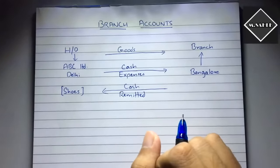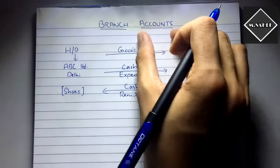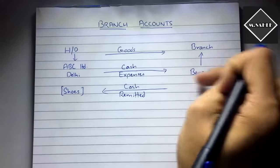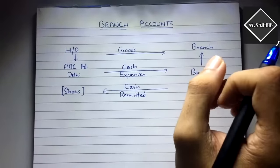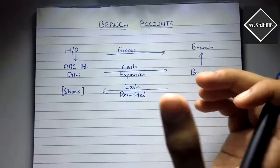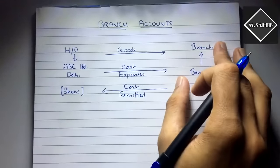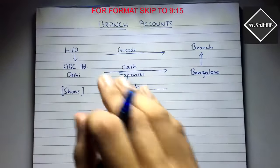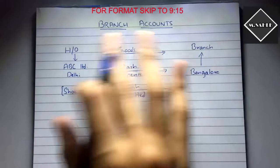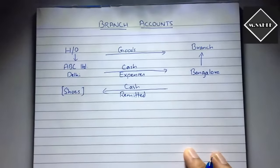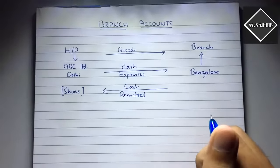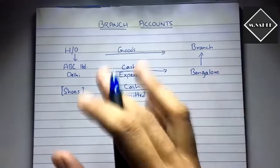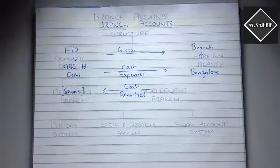Why are branch accounts prepared? The branch is geographically separated, so the head office is very interested to know the position of those branches — whether they are making a profit or a loss. So branch accounts are prepared separately to assess the performance of each branch.